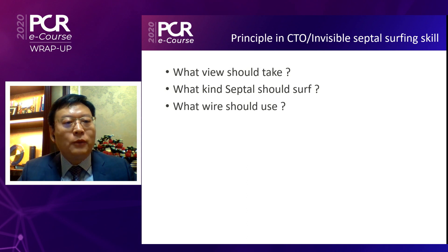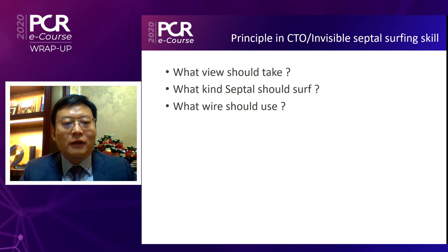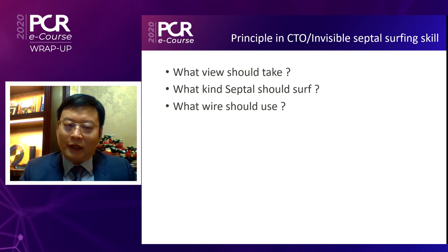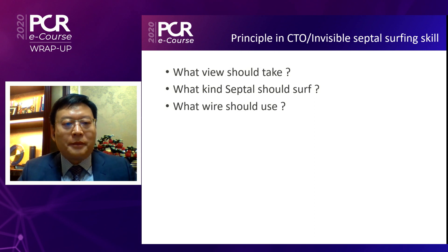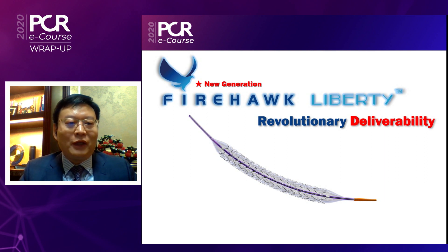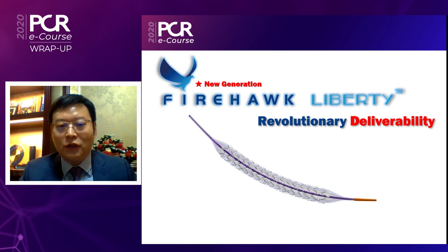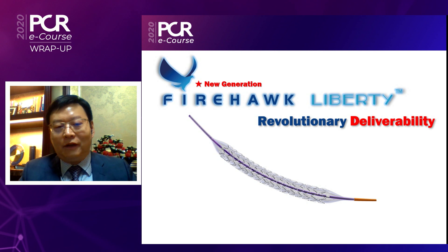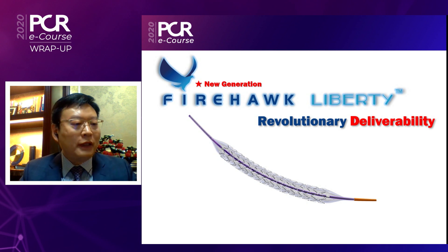What view should be used when we negotiate the CZ0 collateral? What kind of septal should we select? What wire should we use? We can discuss that. We usually use the Fire Hawk stent — it's a new revolutionary delivery system, very good for closing the CZ0. Because the CZ0 usually has a long false lumen without endothelial cells, the Fire Hawk family has excellent drug-eluting characteristics.